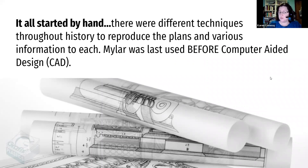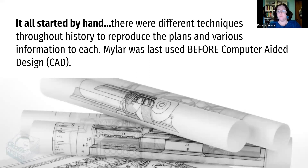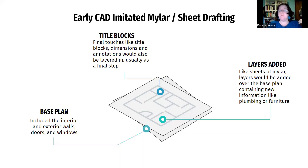Prior to computer-aided drafting and design — CAD — there were a lot of techniques throughout history to make copies and reproduce drawings so you weren't always redrawing everything from scratch. One of the last steps used was mylar. You'd have your whole house drawn, and since mylar is semi-transparent, especially with a light board desk, you could layer a piece over it, trace the house again, draw all the lighting, then pull that away, put another layer over it, and draw the furniture. You could photocopy these and reproduce them really nicely — the prints came out really well.